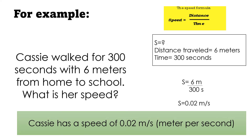Let's try this example. Cassie walked for 300 seconds covering 6 meters from home to school. What is her speed? Using the formula speed equals distance divided by time, the given distance is 6 meters and the time is 300 seconds. So we divide 6 meters by 300 seconds, and the answer is 0.02 meters per second. So the final answer is Cassie has a speed of 0.02 meters per second.